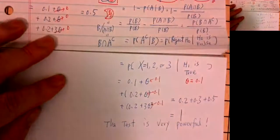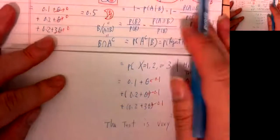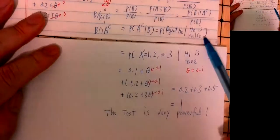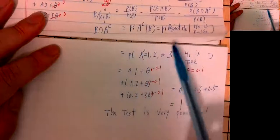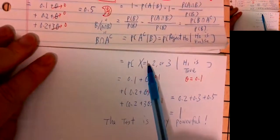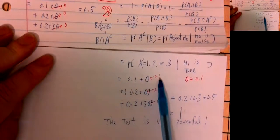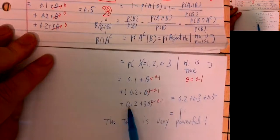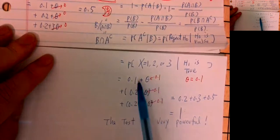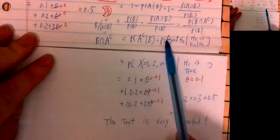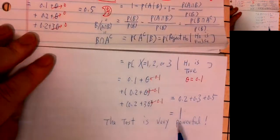Let's try one more time. Power is: under H-naught is false, we reject H-naught. When H-naught is false, H1 is true, meaning theta equals 0.1. X equals 1 is 0.1 plus theta — plug in theta equals 0.1. X equals 2 is 0.2 plus theta — plug in theta equals 0.1. X equals 3 is 0.2 plus 3 theta — plug in theta equals 0.1. If you plug in theta equals 0.1, you get a total of 1. When H-naught is false, there's a 100% chance you reject H-naught, so the test is very, very powerful.